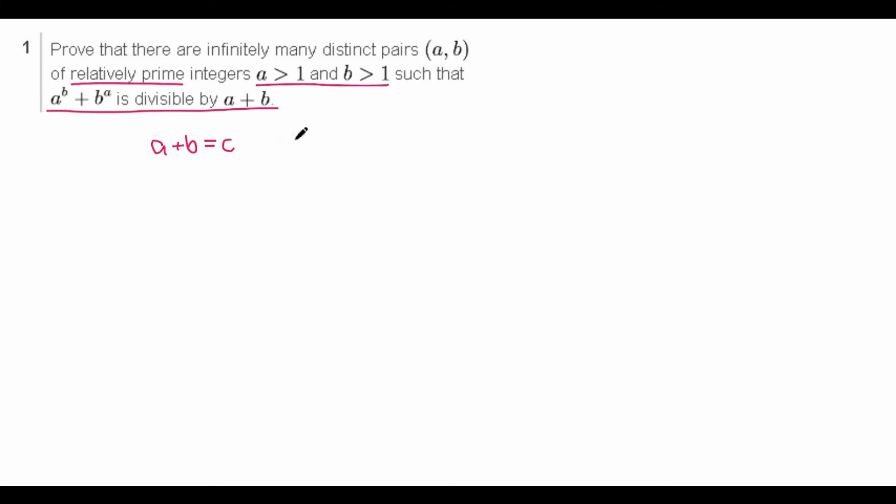So let's substitute b in as c - a. So we have everything in terms of a and c. Our divisibility is c divides a^(c-a) + (c-a)^a. And now we can use our divisibility rules to see that, just get rid of that c in there to get c divides a^(c-a) + (-a)^a, which is (-1)^a times a^a.